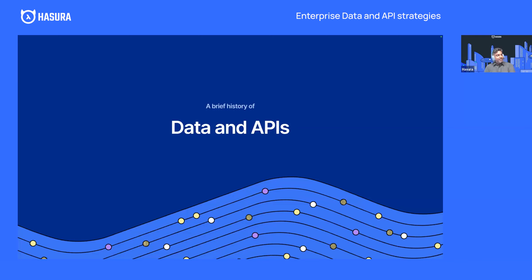Ken, thoughts on this? You've seen this happen in multiple cycles. A couple of things come to mind. Since this is about API strategies, one of my arguments is that data APIs are different — they have different concerns. You need to think about them as a subset of a larger API strategy that requires some specific responses.